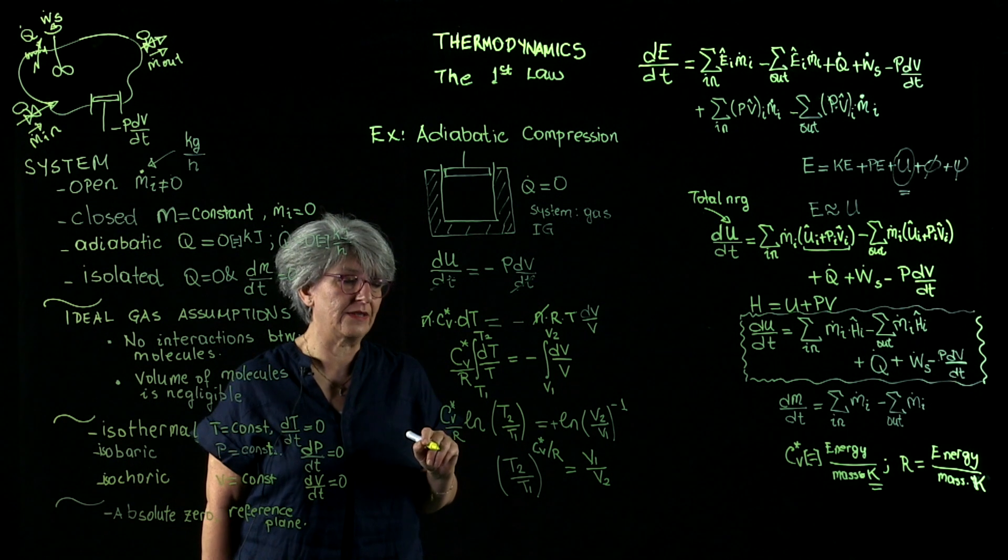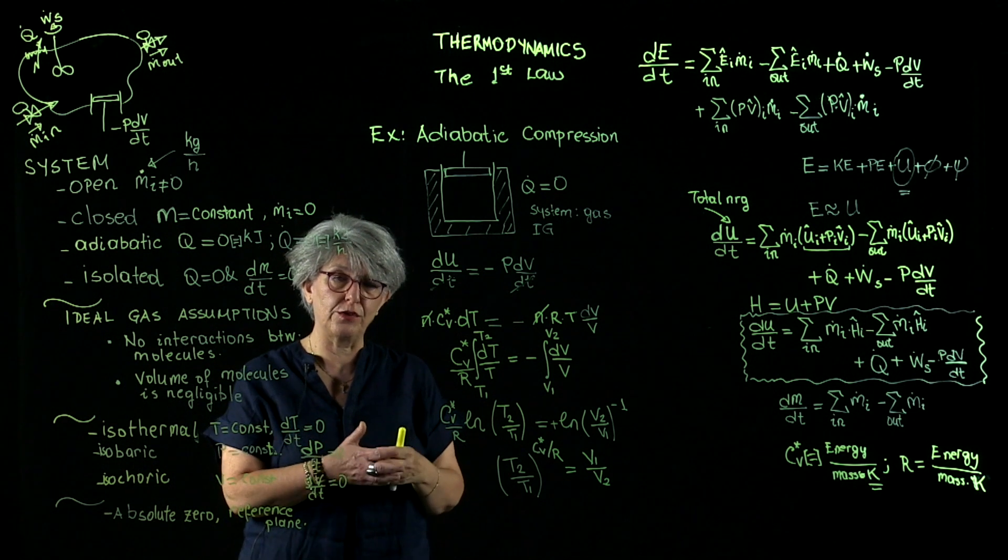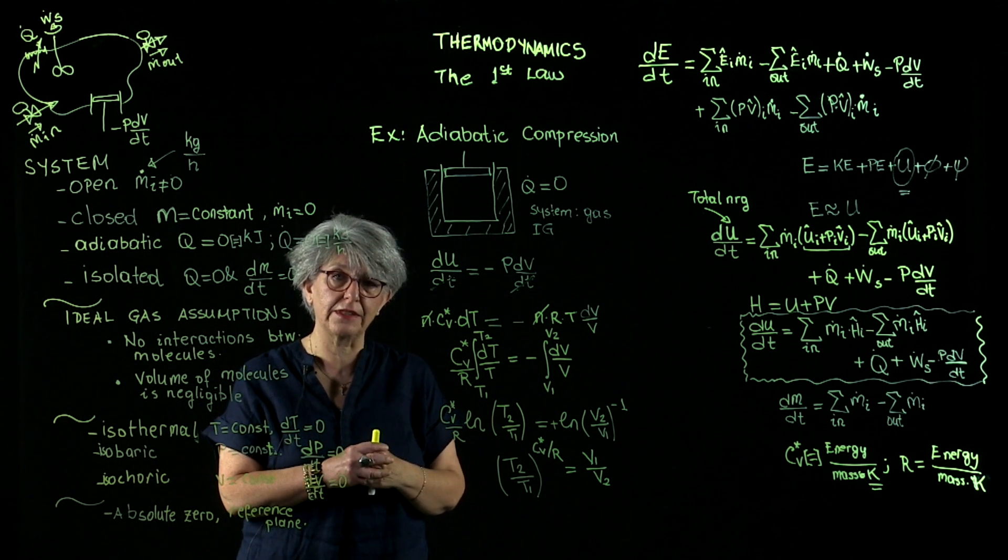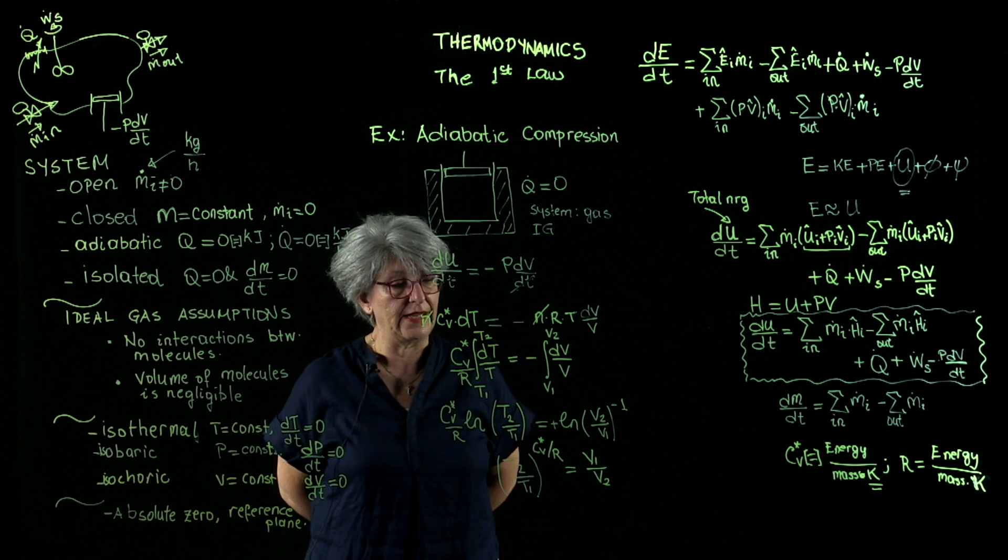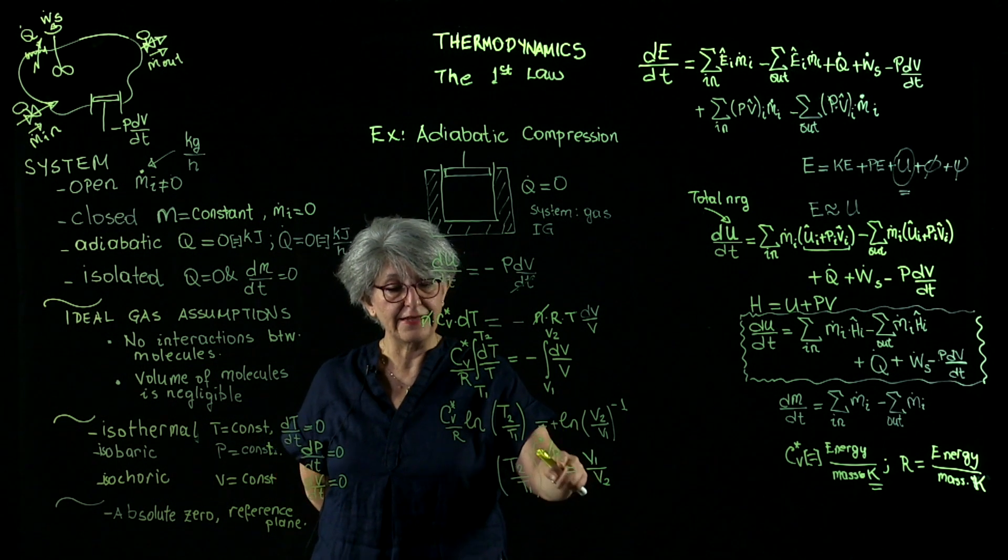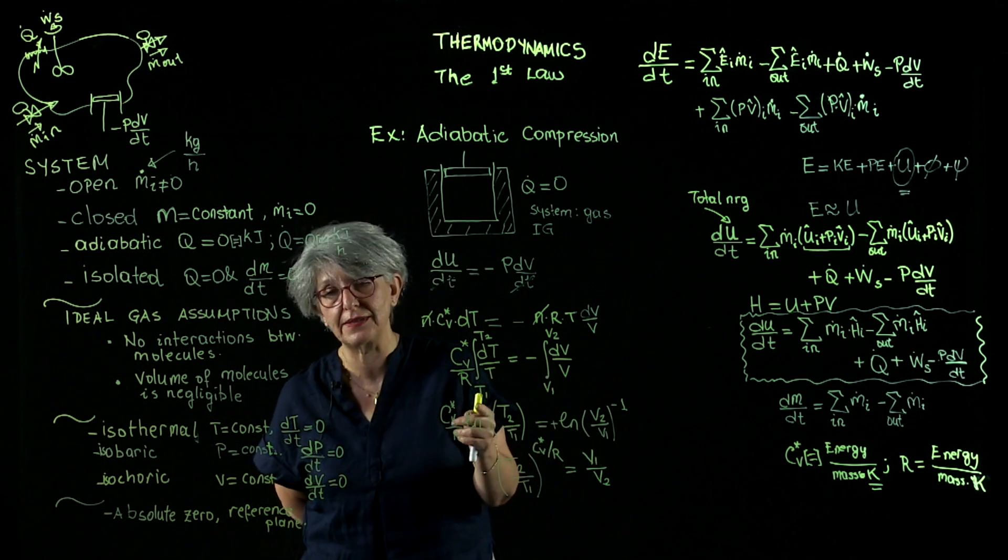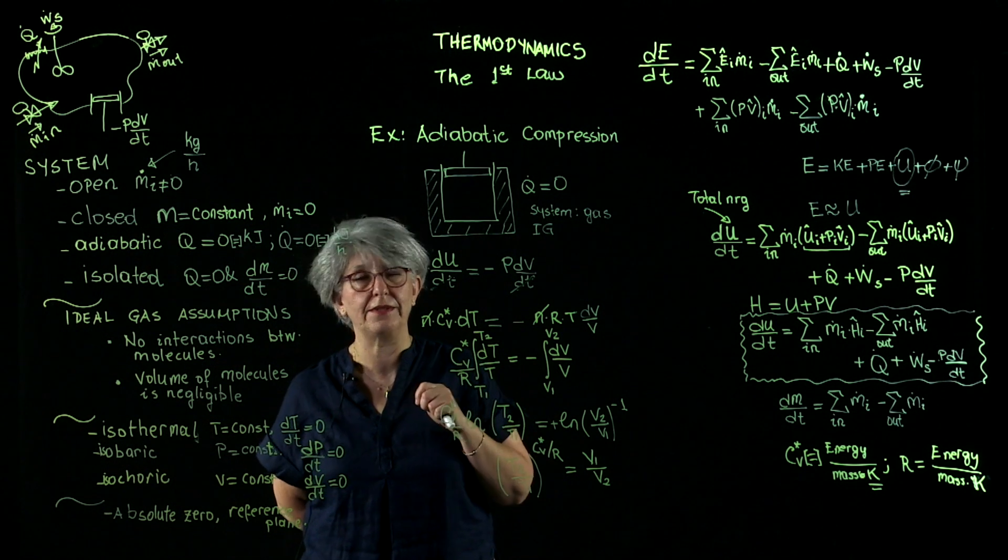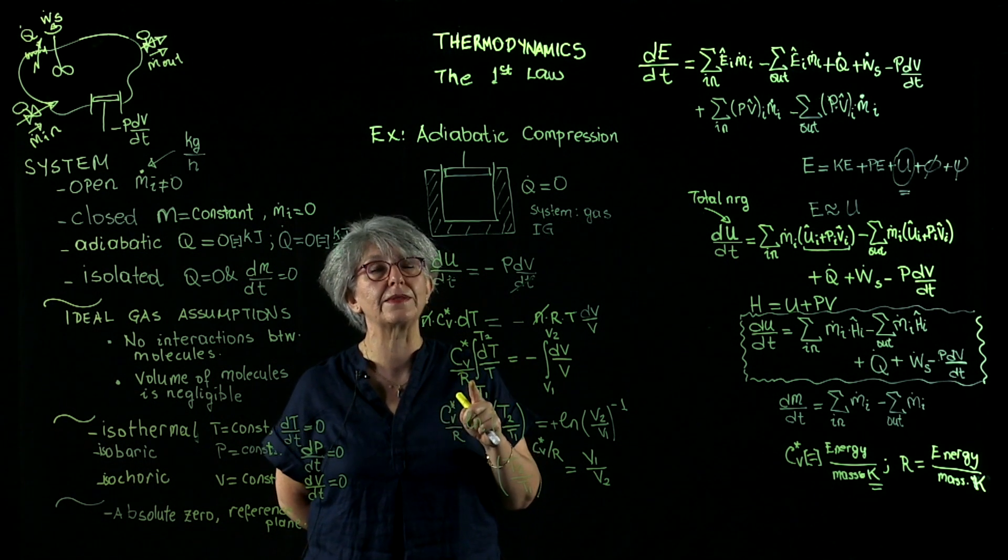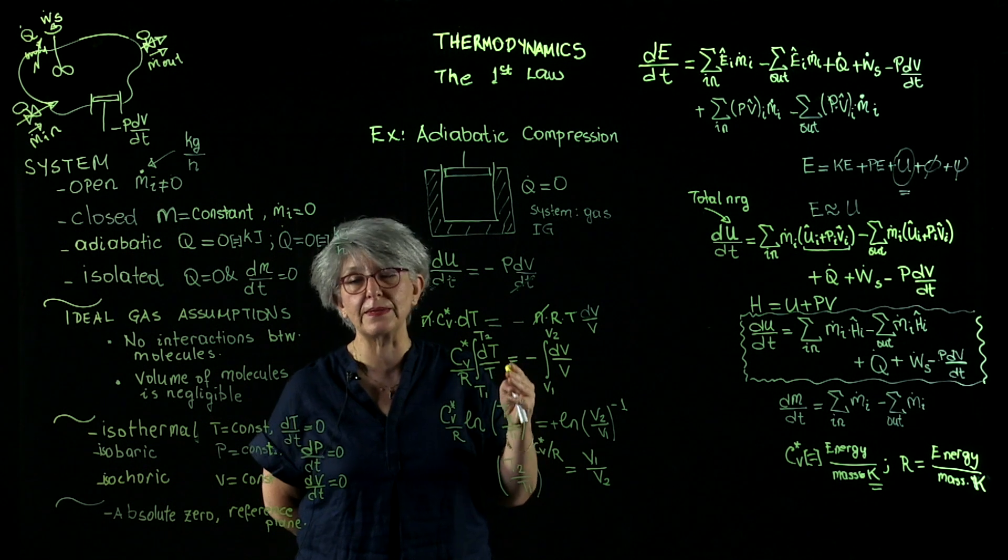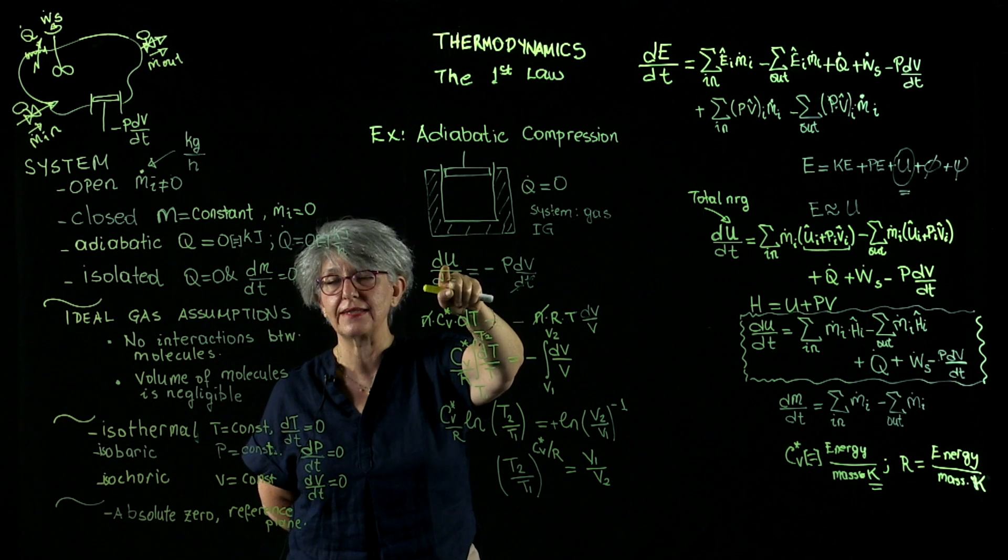Now what does this equation tell me? This equation tells me that if I'm going to change the volume of a gas under adiabatic conditions, the temperature of the gas is also going to change. If I'm going to compress the gas, the temperature will increase. If I'm going to expand the gas, the temperature will decrease. Under which condition? Under adiabatic condition. This is important. You must remember this. Adiabatic compression increases the temperature of the gas. Why? Because of the compression, the internal energy of the gas increased.